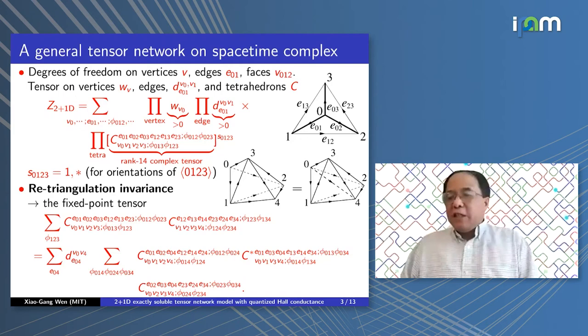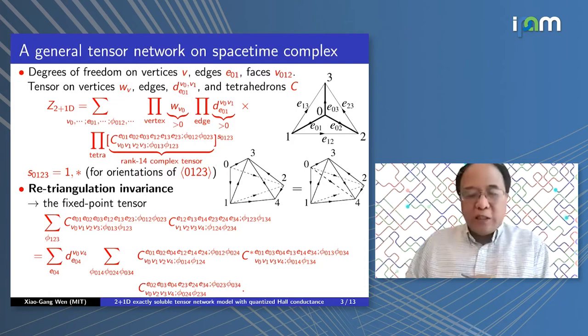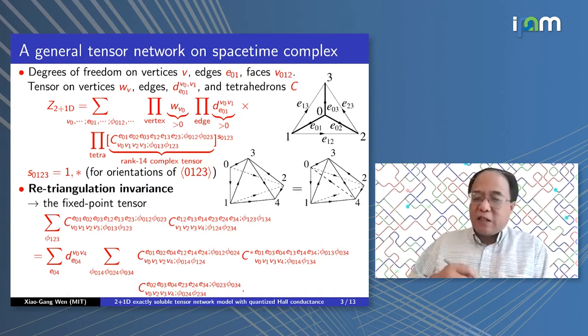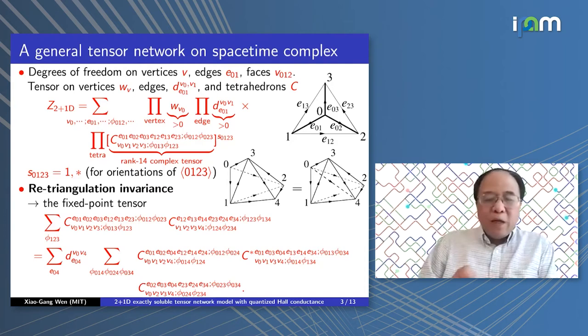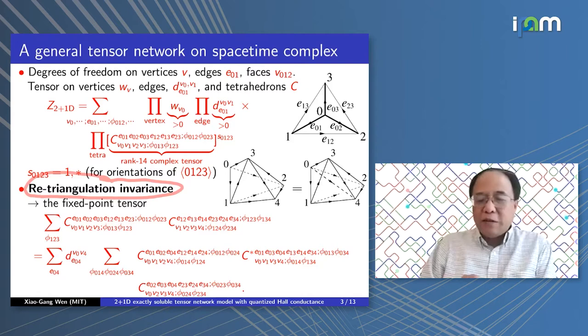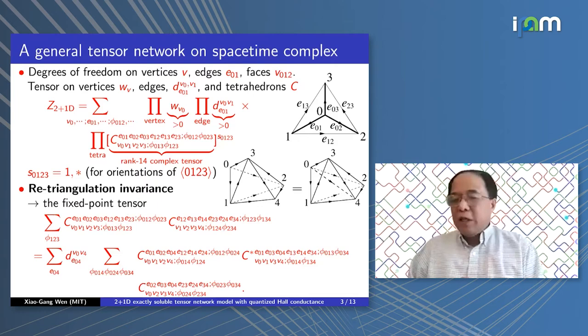This is a very general way to describe a physical system using a tensor network. The reason I set up the tensor network in this sophisticated way is that we can consider a special kind of tensor which has retriangulation invariance. This retriangulation invariance is a sufficient condition to give us a fixed point tensor — not necessary, but sufficient — and because the fixed point tensor has scale invariance, smaller and bigger tensors are the same.